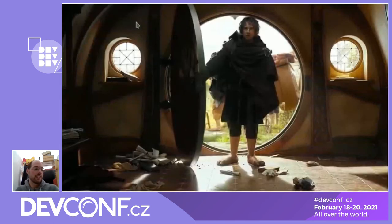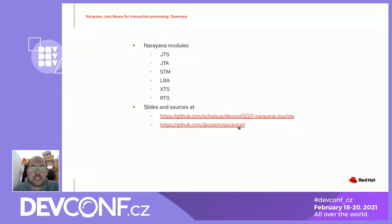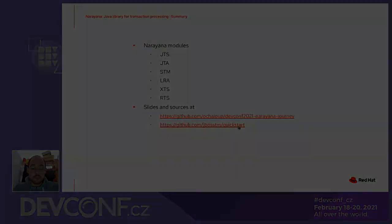With that, we are at the end of our journey through the Narayana world of transactions. I hope you got an interesting overview of what Narayana modules are capable of. If you're interested, you can check the Narayana quickstarts where there is a lot more code than what I was showing, or check the simple examples I was showing on my GitHub.